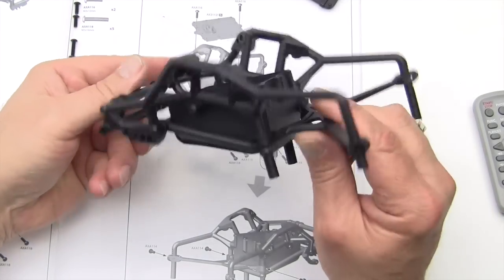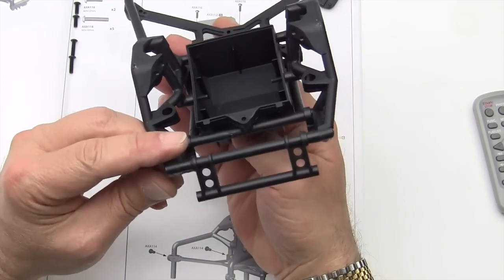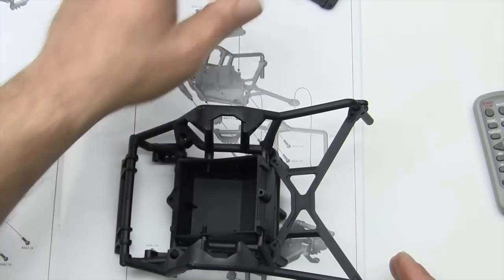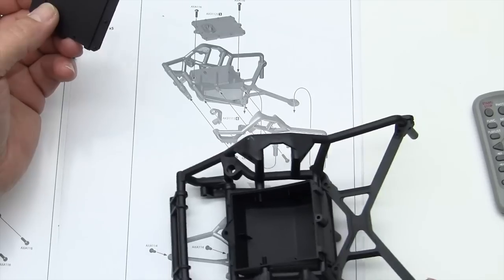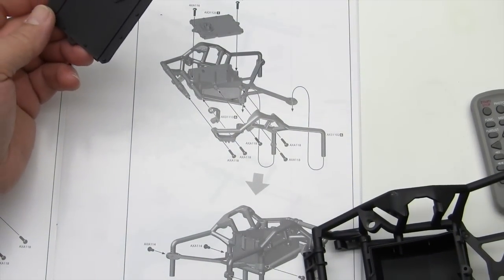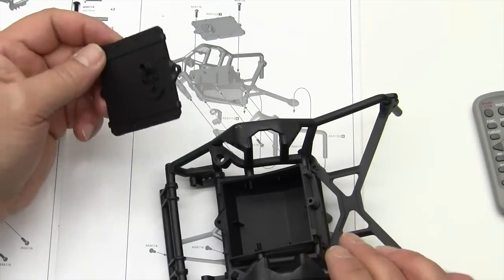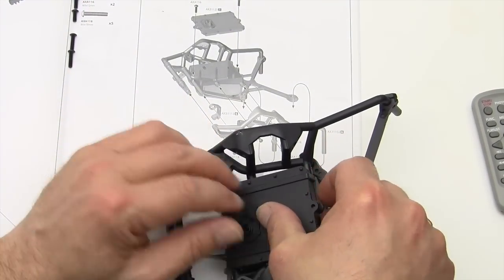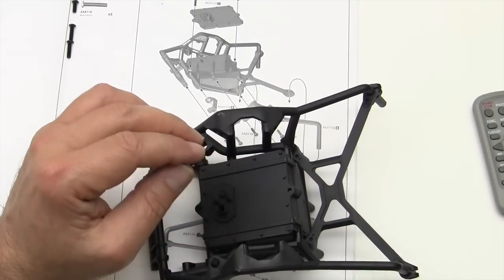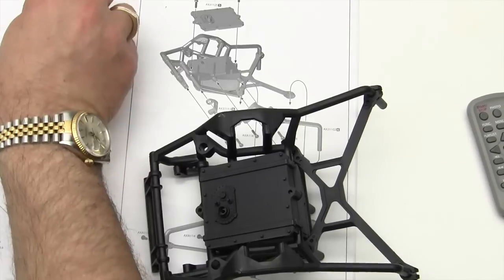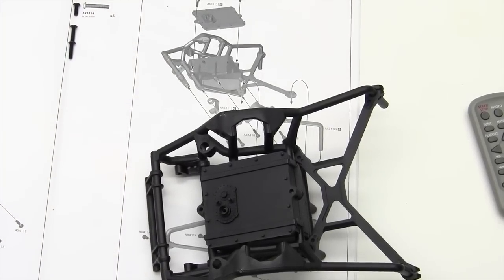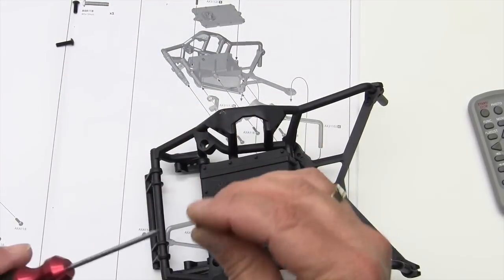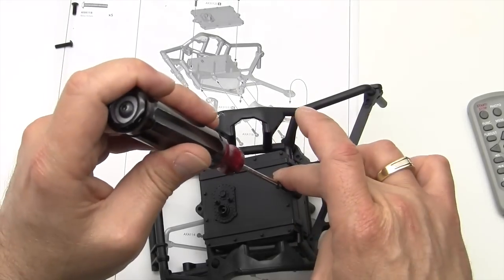Alrighty. Now everything looks square and lined up and good. Let's take the little top here and see what direction that goes on. Little pointy end here goes to the pointy end here. And we'll use the medium sized ones, the twelve millimeter that go into here.